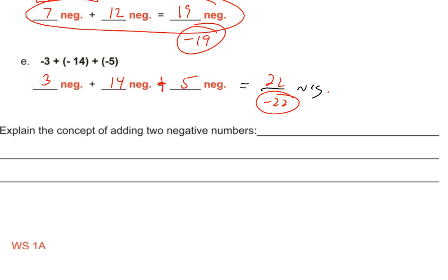Take a moment as I prepare to pass out your worksheets. Fill in those spaces and explain in your own words the concept of adding two negative numbers. There's no wrong answer — just write it in your own words.